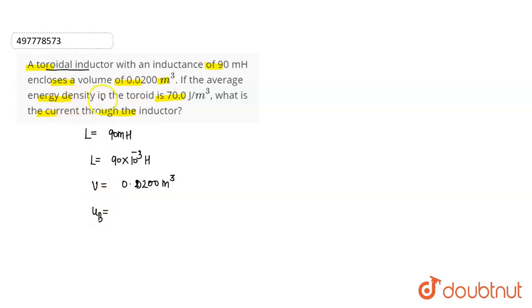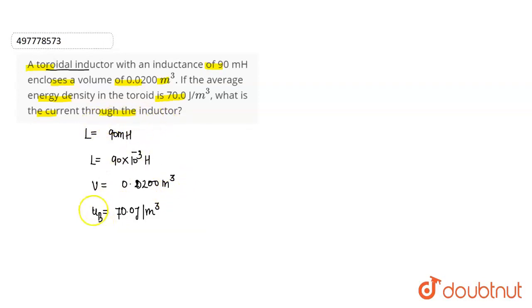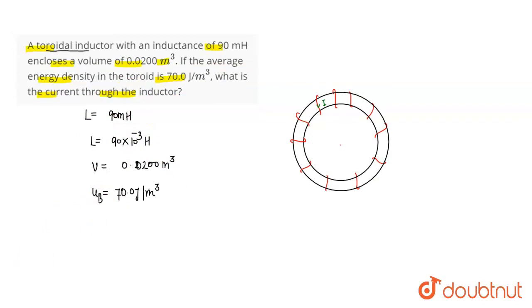Average energy density is equal to 70.0 joule per m³. This energy density is the magnetic field energy density — the average magnetic energy density. Now let's find out the current through the inductor. We have a toroidal inductor, and let's see how a solenoid is made.